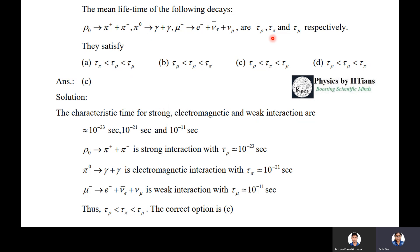You have to look at the interaction type. You must know that whenever there are gamma particles, so this is electromagnetic interaction. For this kind of interaction where neutrino is the decaying product particle, it is weak interaction. And this π+ and π- is strong interaction.